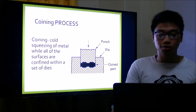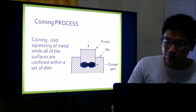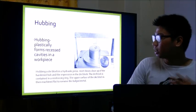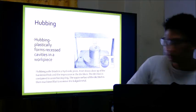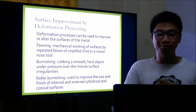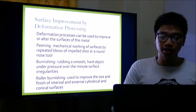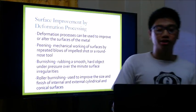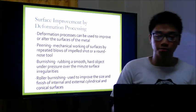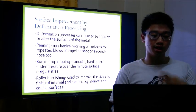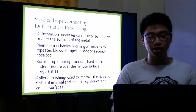Coining is the squeezing of metal while all surfaces are confined within a set of dies, and it plastically forms precise cavities in a workpiece. Deformation processes can also be used to improve or alter the surfaces of metal. Shot peening is the mechanical working of surfaces by repeated impacts of shot or a round-nose tool. Burnishing involves moving a smooth or hard object under pressure over the minute surface irregularities. Roll burnishing is used to improve the size and finish of internal, external, cylindrical, and conical surfaces.